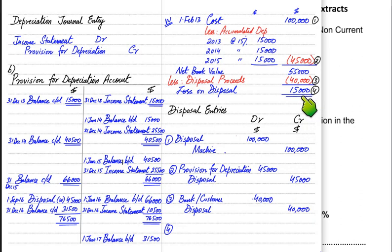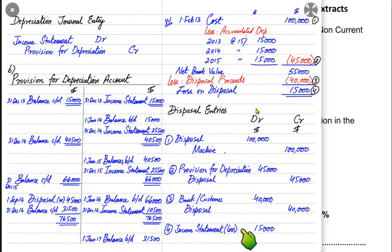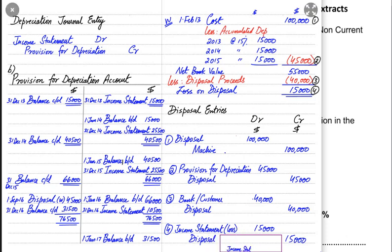Lastly, the fourth entry is for gain or loss. A loss or expense is always debit in nature because it reduces our capital. Anything that increases capital — profit, income, or gain — is always credited. If there is a loss, the income statement is debited (write 'loss' in brackets), and disposal account is credited. If there is a gain, the entry is reversed: income statement is credited and disposal account is debited.